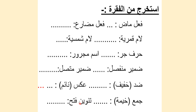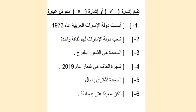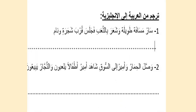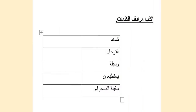Also: 'tanwīn fath' meaning double fathah. 'Isharatu sah aw isharatu khata'' — take the correct or wrong answer. 'Uktub' means write — 'al-kalimatul atiyya' — these words — write the opposite of these words. 'Tarjim minal-'arabiyyati ilal-injilīziyya' — translate from Arabic to English. 'Uktub murādif al-kalimāt' — write the synonyms of these words.